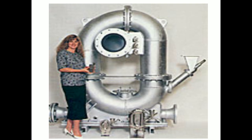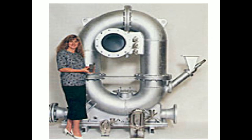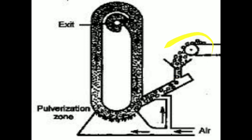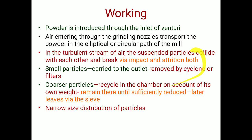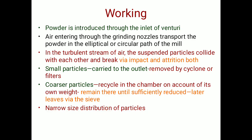This is the actual photograph of a fluid energy mill. The powder is introduced through the inlet of the venturi — this part here. The air entering through the grinding nozzle transports the powder in the elliptical or circular path of the mill. In the turbulent stream of air, the suspended particles collide with each other and break via both impact and attrition.